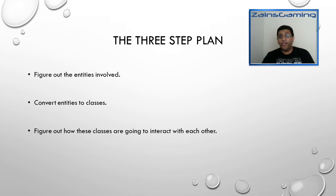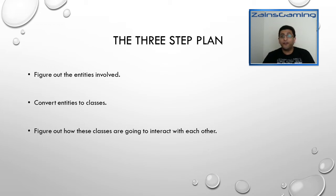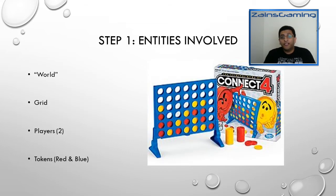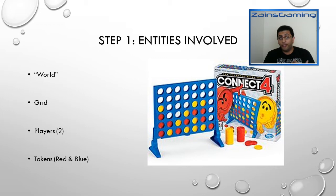The game plan is similar to what we saw in Snakes and Ladders. We're going to first figure out the entities involved in the game, try to convert them to classes, and then figure out how they interact with one another. We have the world as one of the entities — this is where everything takes place and where the players play the game. We have the grid, which is what the players play on. We have the players themselves, and then we have the token — red and yellow in our case.